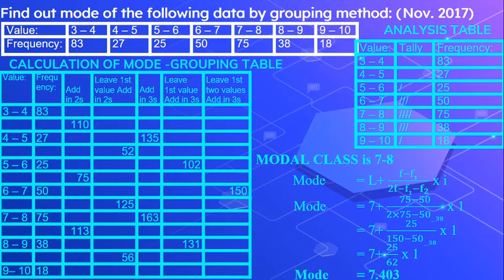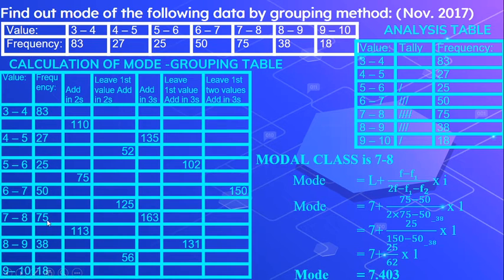I will first tell you how the grouping table is done. The class intervals given are 3 to 4, 4 to 5, 5 to 6, 6 to 7, 7 to 8, 8 to 9, and 9 to 10, with their frequencies. First, we add the frequencies in 2s. These two are added and written, then the next two are added and written in between, then the next two — giving us 25 and 50, then 75 and 38. We stop when we don't have 2 more frequencies.